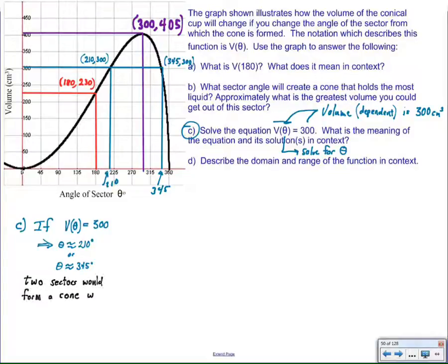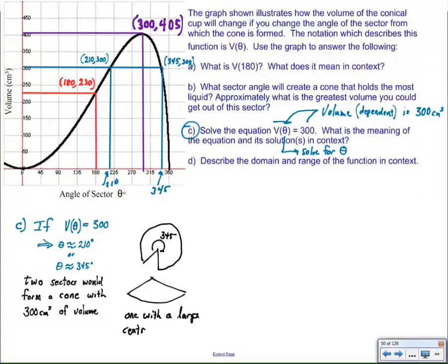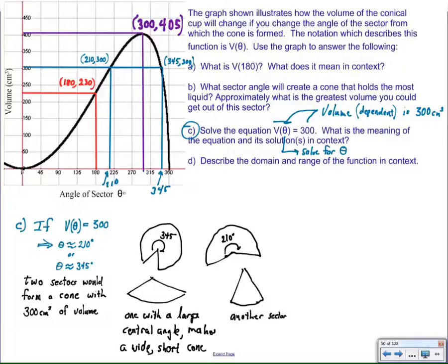Two sectors would form a cone with 300 cubic centimeters of volume. And then I can actually illustrate if I have the time. One of the cones will have a larger central angle and make a wide, short cone. The other one will have a smaller central angle and it will make a tall, narrow cone. And they will both hold the same amount of stuff, even though their shapes are different.